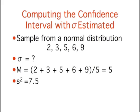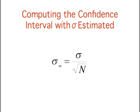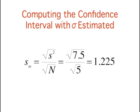The five numbers shown here were sampled from a normal distribution. The first steps in computing a confidence interval are to compute the sample mean and the variance. The mean equals 5 and the variance equals 7.5. The next step is to estimate the standard error of the mean. Since we don't know the standard deviation of the population, we use the sample standard deviation to compute an estimate of the standard error. S sub m is the estimated standard error of the mean, and s is the sample standard deviation. In this example, the estimate of the standard error of the mean is equal to 1.225.